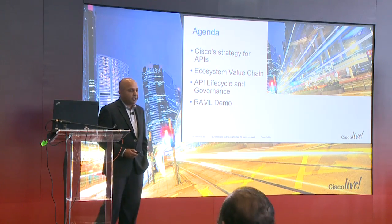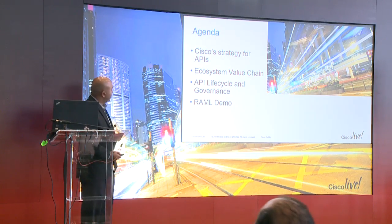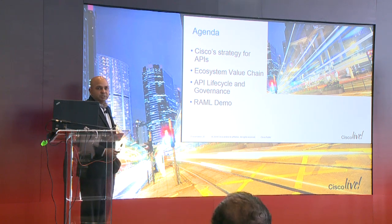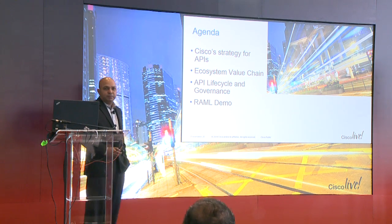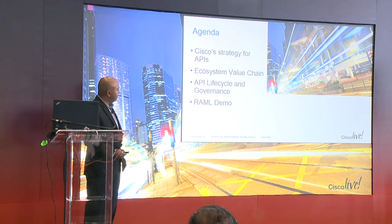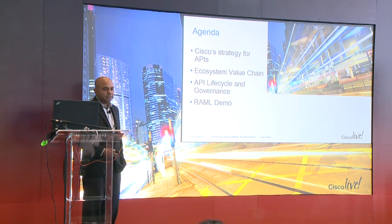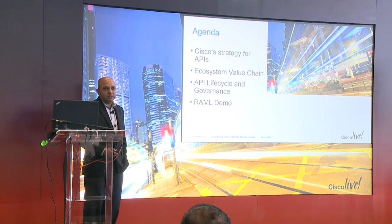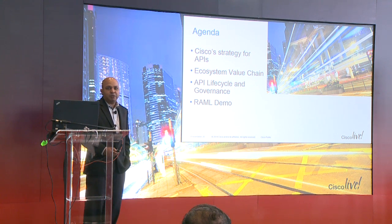The four things we're going to cover today are essentially the strategy of APIs, the ecosystem itself and how we think about it from a value chain perspective, the lifecycle management, and the governance. Last but not least, our introduction to RAML — a modeling language on how to create REST-based APIs.